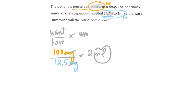Let's do a mental calculation before using the calculator. It's 100 divided by 12.5. Since 12.5 is difficult to work with mentally, we can round it to 10 for our estimate. So 100 divided by 10 — how many 10s into 100? That's 10. Ten times 2 is 20. Our estimate says the answer should be around 20. It won't be exactly 20 because we didn't use the original 12.5.